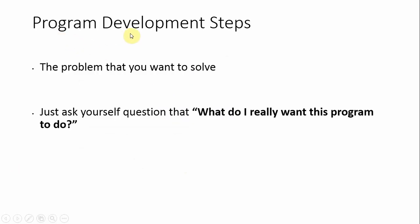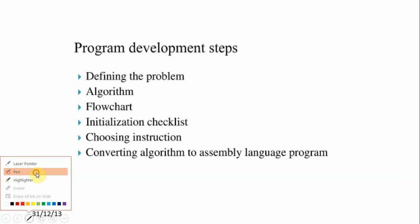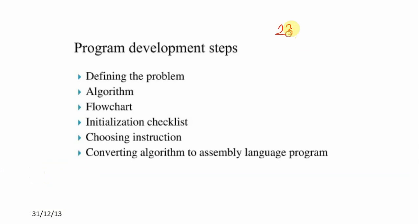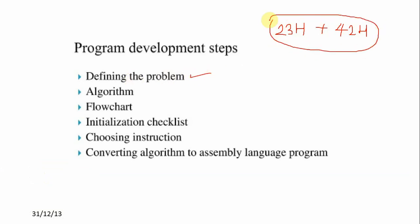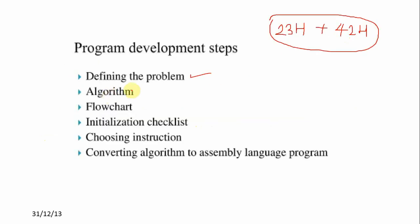The first program development step is to define the problem. How to start the program — first, define the problem. For example, we want to add two numbers. You should ask yourself the question: what do I really want this program to do? The answer to that question is what we will do in the program. This is called defining the problem.